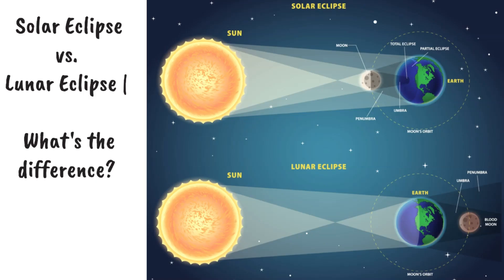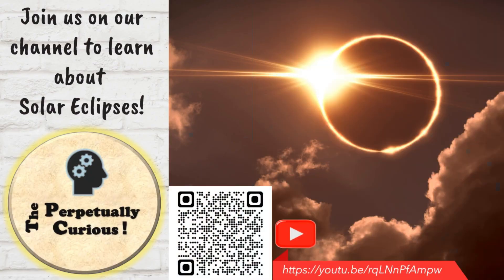The primary difference between a lunar and solar eclipse lies in the positioning of the Sun, the Moon, and the Earth, as well as the duration of the event. As depicted in the figure, a solar eclipse occurs when the Moon obstructs the Sun's light, casting its shadow on Earth. In contrast, during a lunar eclipse, the Earth is positioned between the Sun and the Moon. For more insights into this fascinating topic, we invite you to watch our video on solar eclipses on our channel.